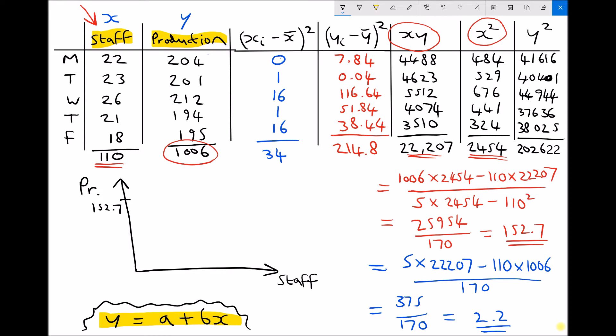And we found the value of b to be 2.2. b is the gradient. We don't really know what our scales are here, but we know that's a positive gradient, so we have a line with a positive gradient.